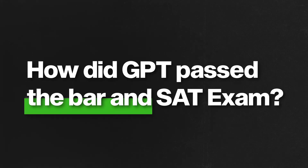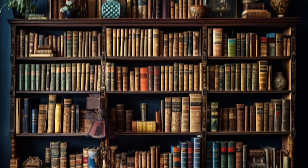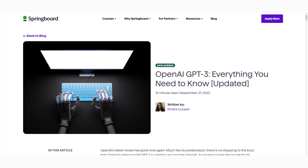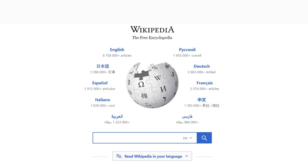But how did GPT pass the SATs and bar exams? This is because GPT was trained on a large corpus of text data from the internet, including thousands of books, millions of articles, and the entirety of Wikipedia — so it knows everything about each topic.